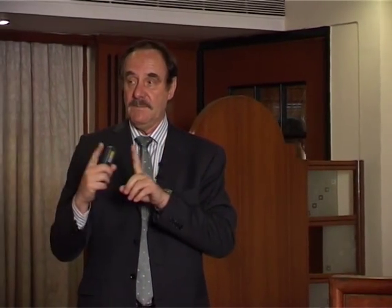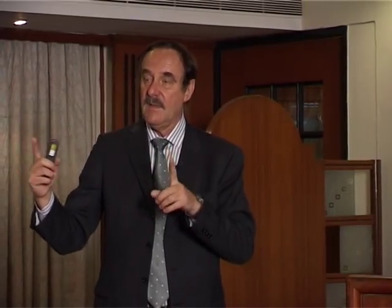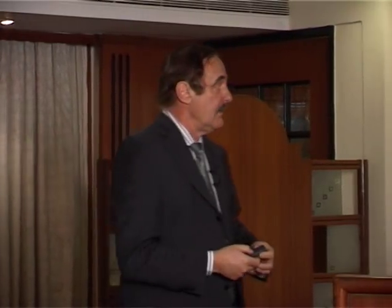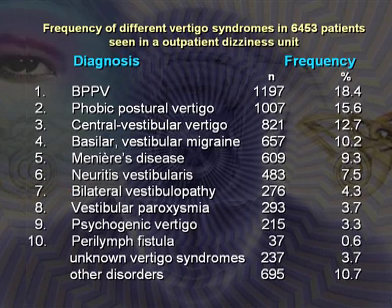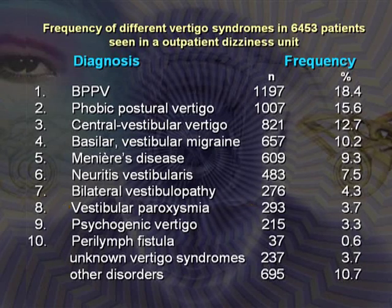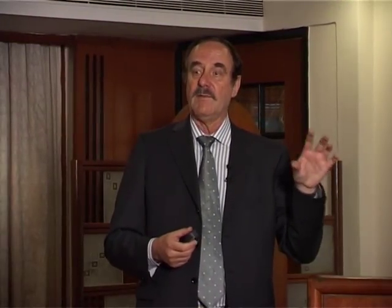The duration of vestibular migraine attacks can range from minutes to days, mostly hours. Then of course Meniere's disease — possibly underdiagnosed — vestibular neuritis, bilateral vestibulopathy, and vestibular paroxysmia. We have seen 293 patients with vestibular paroxysmia; it's really frequent, and you must have this diagnosis in your personal spectrum, otherwise these patients go from doctor to doctor.